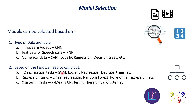In the upcoming videos, we will discuss all of these individual models, and I will explain their pros and cons. Based on those pros and cons, we need to choose the proper model best suited for a particular problem. The general rule is: for images and videos, use CNN; for text data and speech data, use RNN; for simple numerical data, use machine learning models like SVM, logistic regression, or decision trees. For classification use classification models, for regression use regression models, and for clustering use K-means or hierarchical clustering.